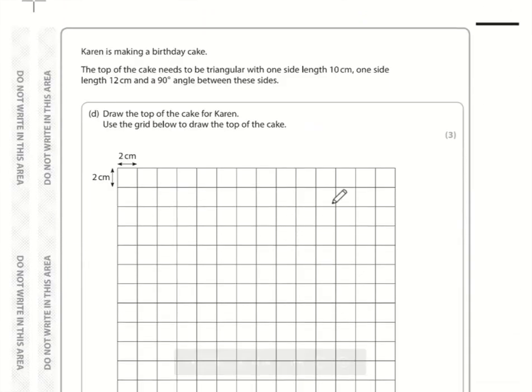Karen is making a birthday cake and it's going to be triangular with one side length 10 centimeters. If this is 2 centimeters, then 10 centimeters would be 2, 4, 6, 8, 10. The other side length is 12 with a 90 degree angle. So 2, 4, 6, 8, 10, 12. There we go. This is the top of the cake, but we'd need to draw a line to turn it into a triangle.